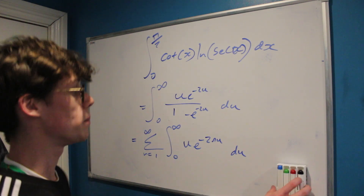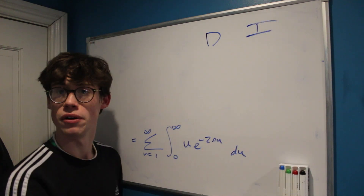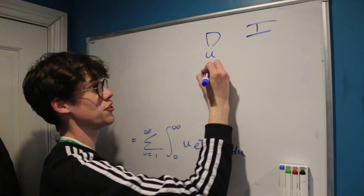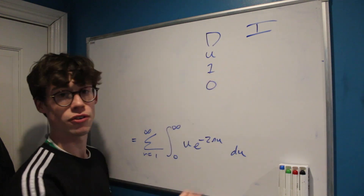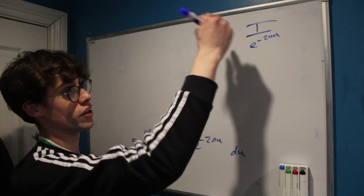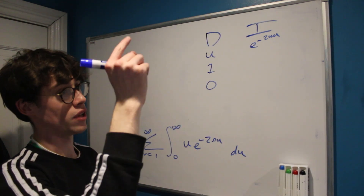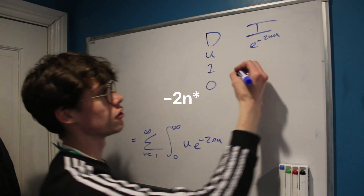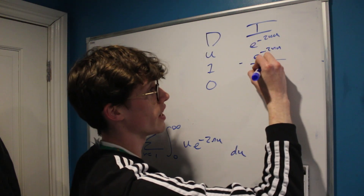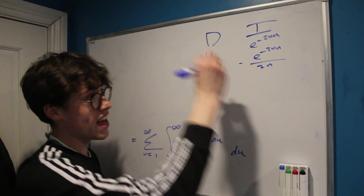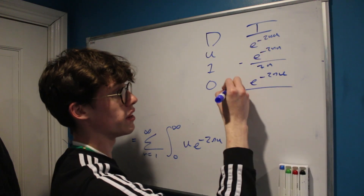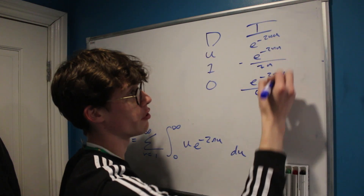This is now very approachable using integration by parts — specifically the DI method, which lays out integration by parts in a clear visual way. I differentiate u: differentiating once gives 1, differentiating again gives 0. I integrate the exponential: the integral of e^(−2nu) is e^(−2nu)/(−2n), and integrating again gives e^(−2nu)/(4n²).